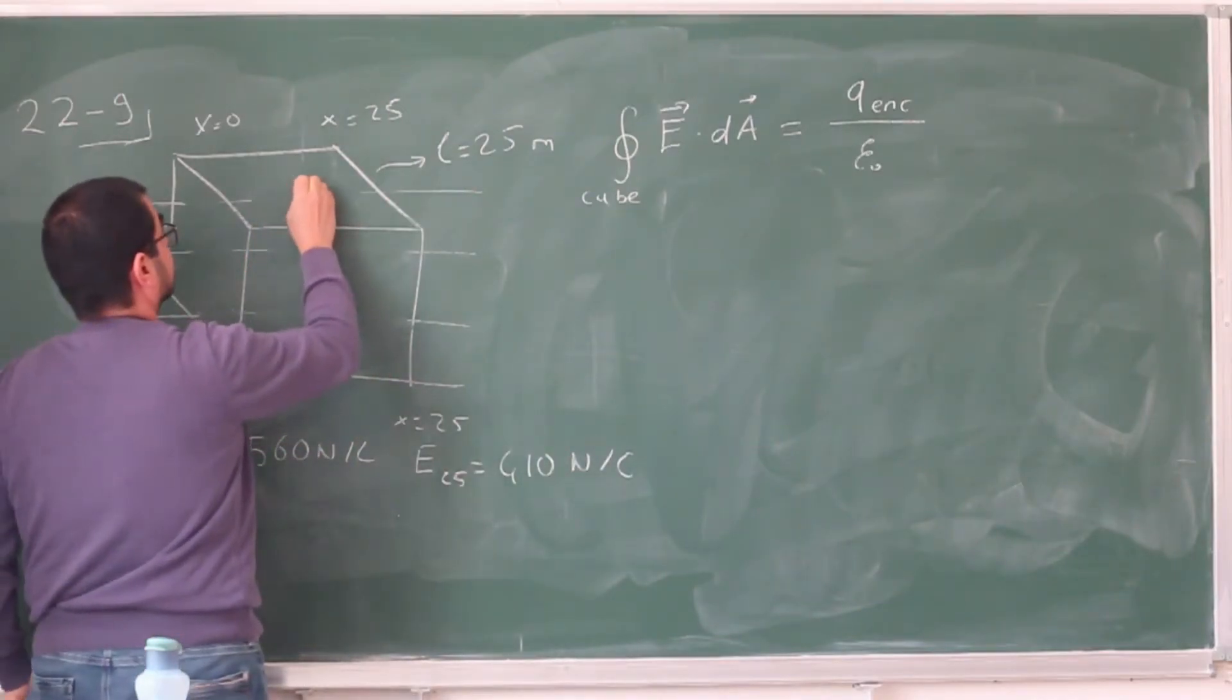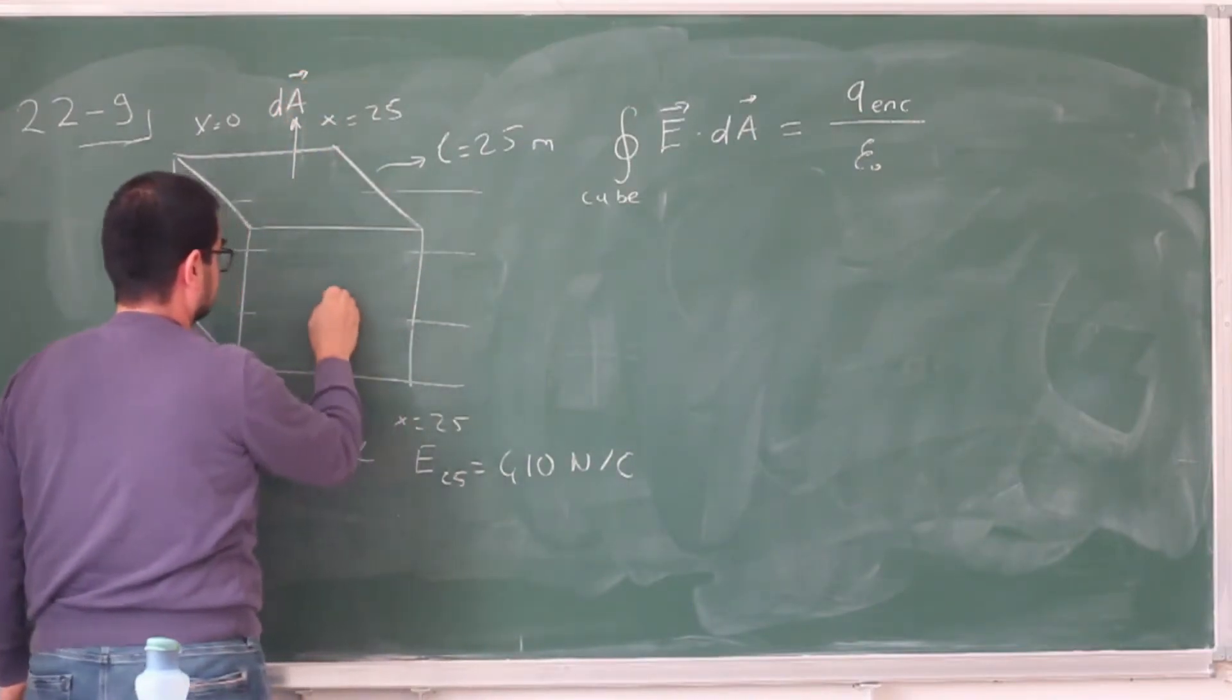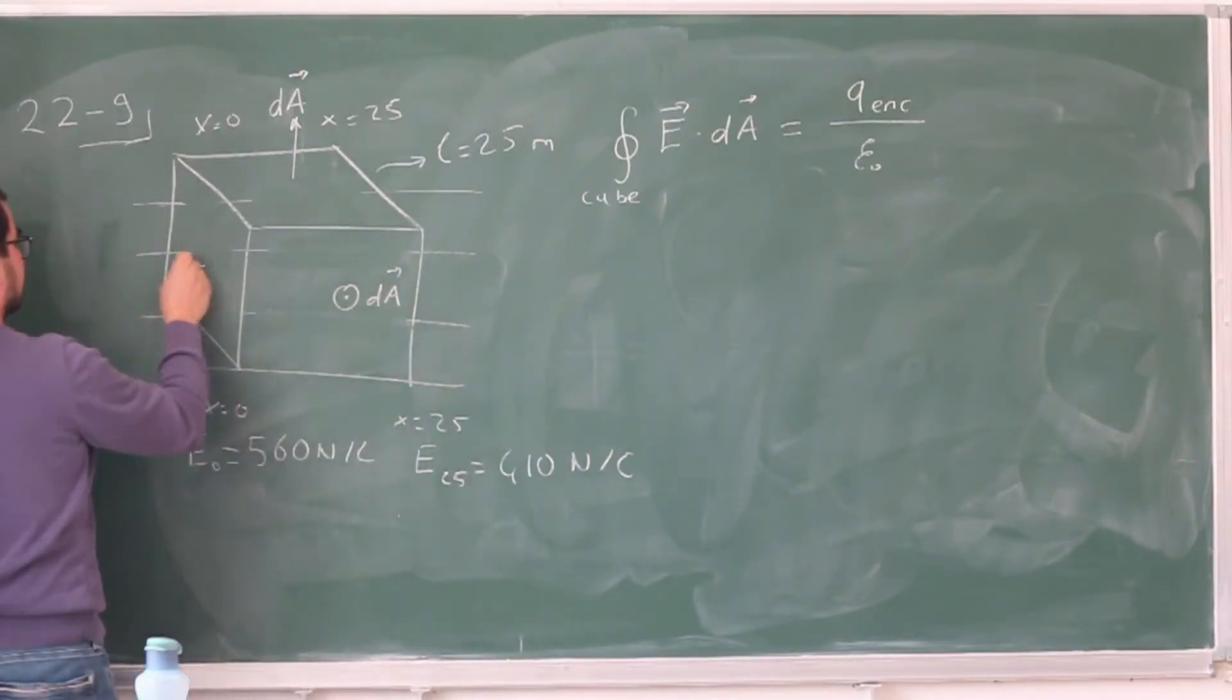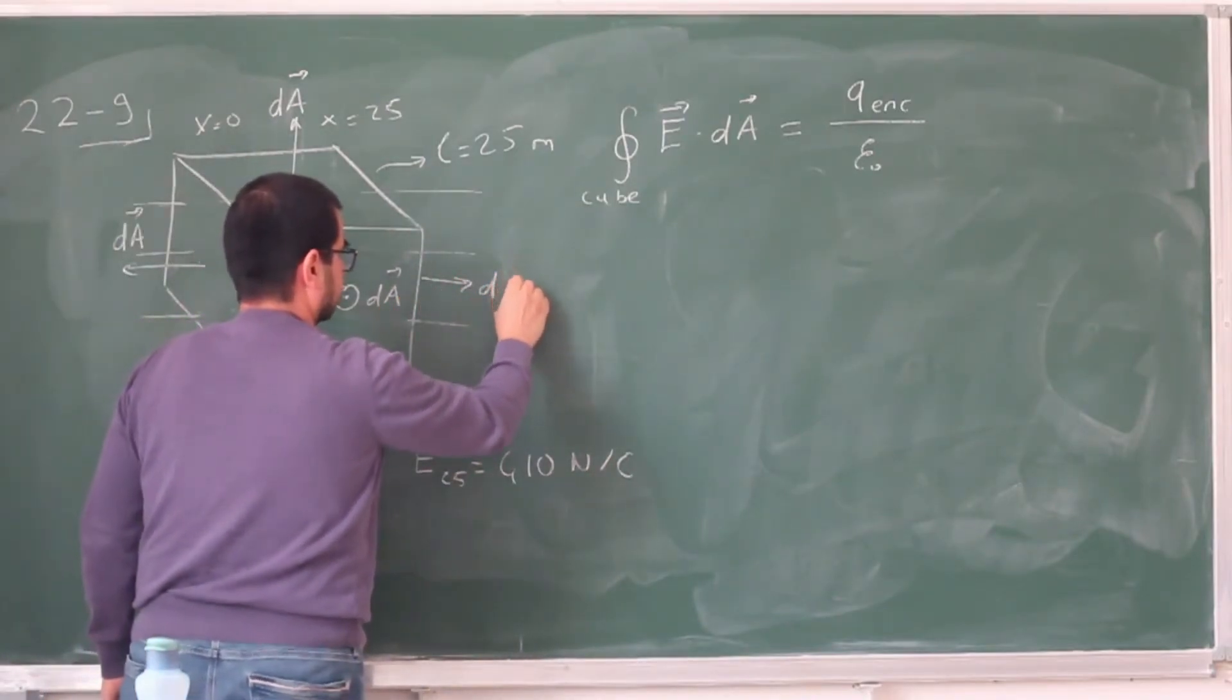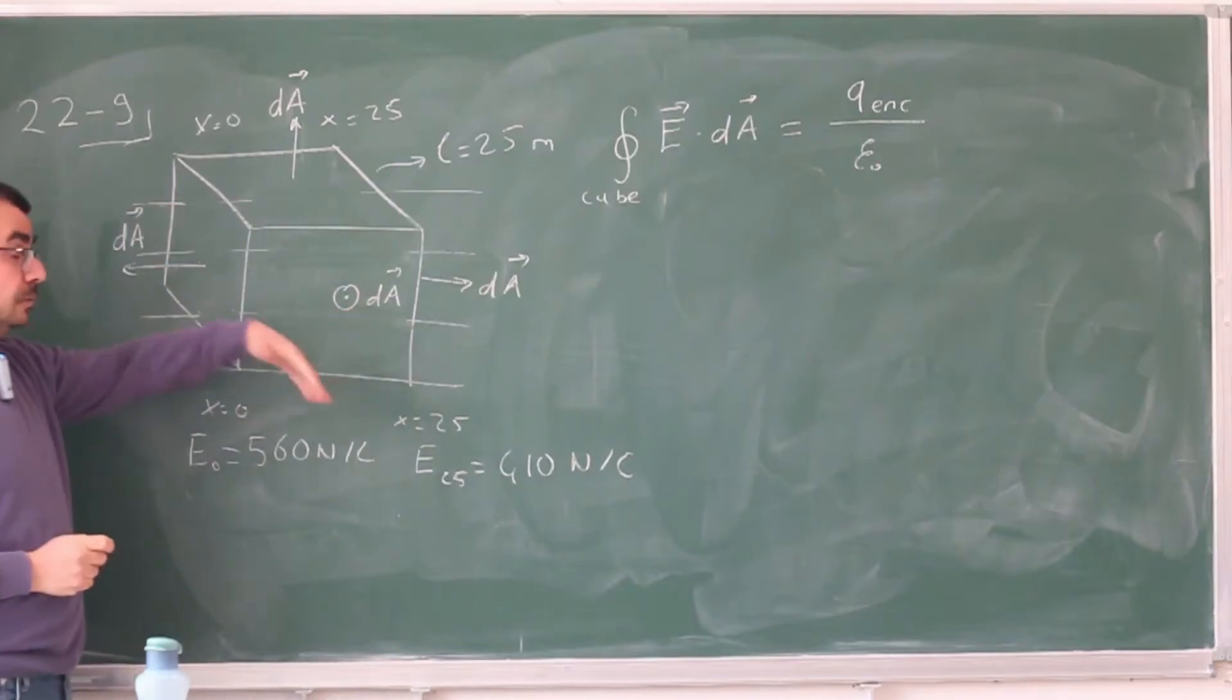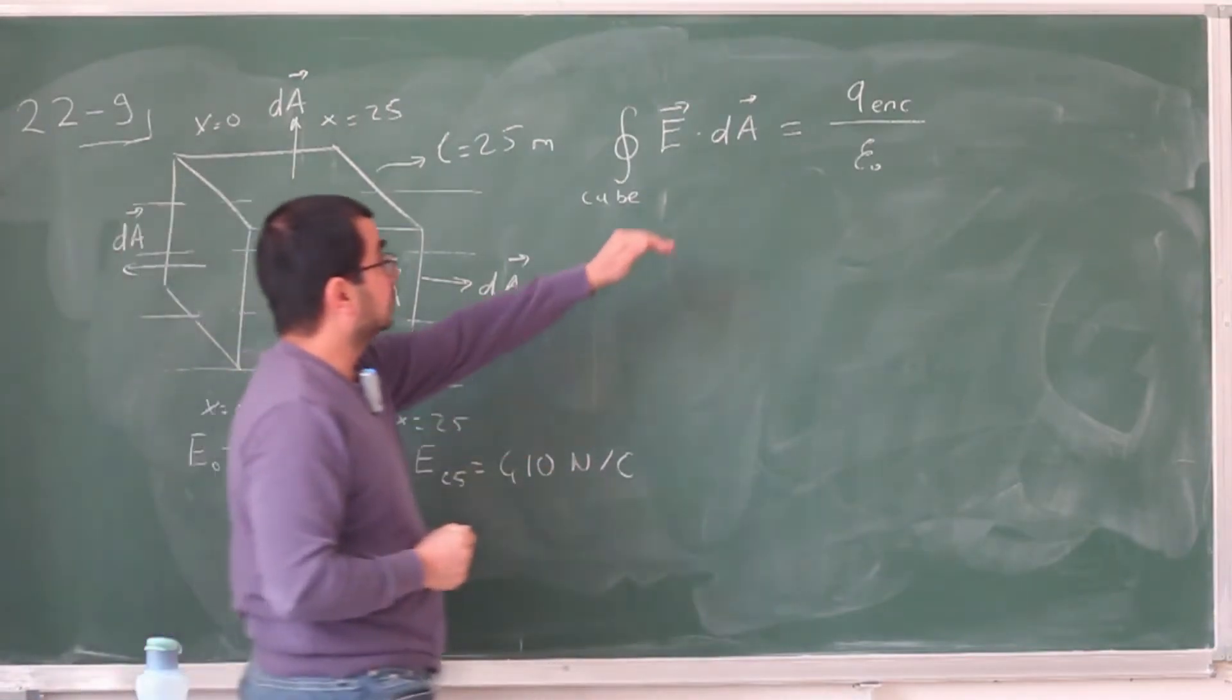So here, on the top face, the dA will be upwards. On the front face, it will be pointing towards you. On the left, it will be pointing to the left. On the right, it will be pointing to the right, and so on and so forth. So for six different faces of the cube, there will be six different directions for this dA. But over a surface, because the faces of the cube are just flat surfaces, it's just going to be a constant vector. This direction is not going to change. So how can we calculate this dot product?